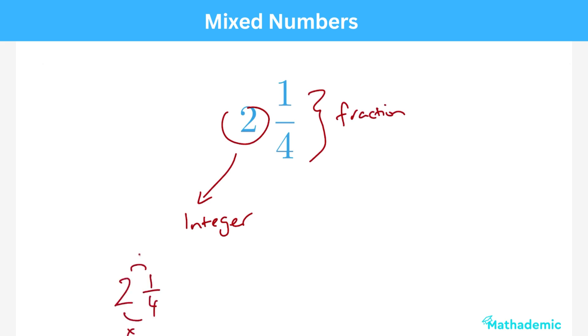So for 2 and a quarter, multiply 2 and 4 to get 8 and then add it to the 1. We end up with 9 over 4.